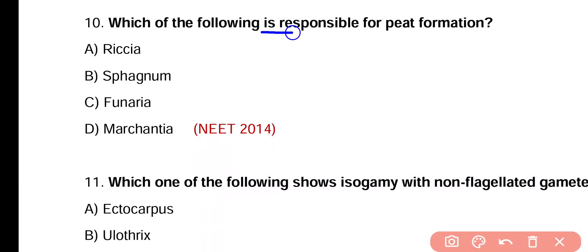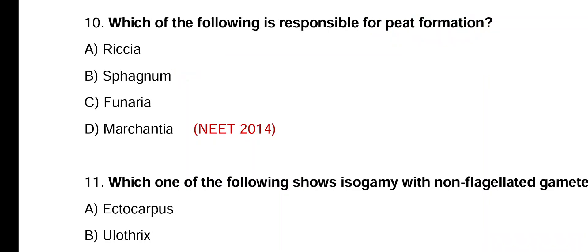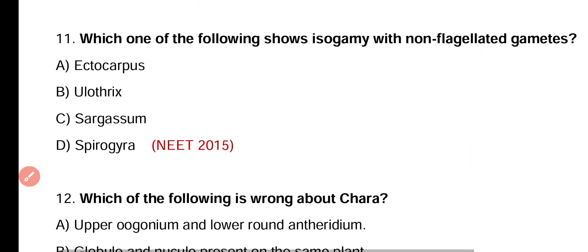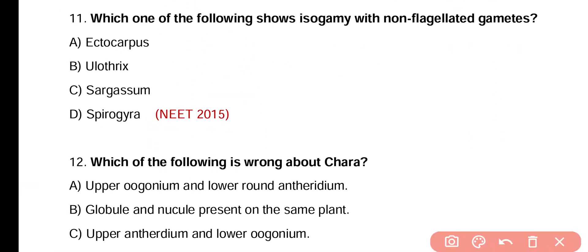Question 10. Which of the following is responsible for peat formation? Riccia, Sphagnum, Funaria, or Marchantia. Correct answer is option B — Sphagnum moss is responsible for peat formation, which is used as a fuel.